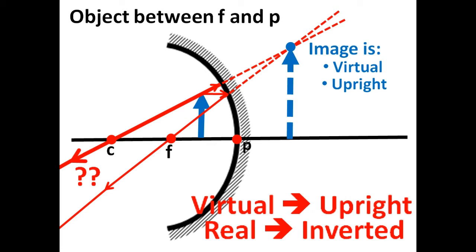This hint applies to all types of mirrors — whether the mirror is concave, convex, or plain. So long as it is a mirror, virtual images are always upright while real images are always inverted.